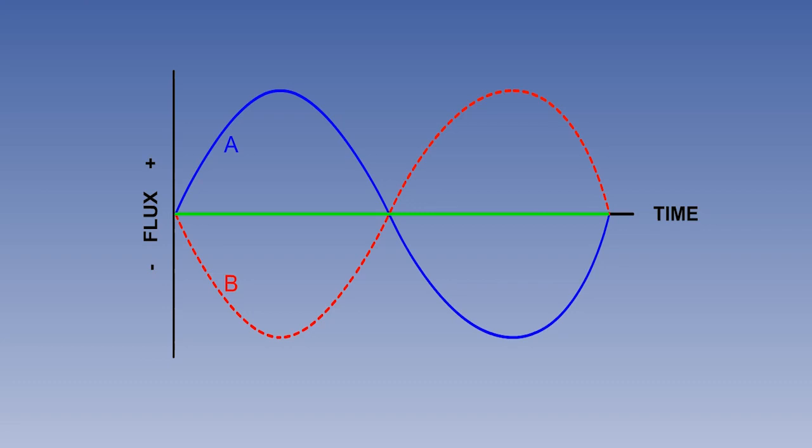So far, we have been looking at the coil in isolation, without considering the Earth's magnetic field. However, if the flux produced by the Earth's magnetic field were present as a background, the positive and negative flux would start from a different baseline, which would not be zero.